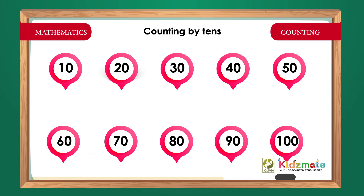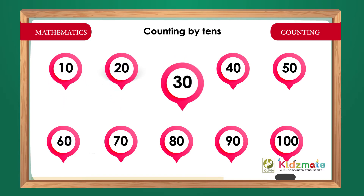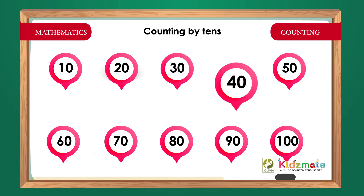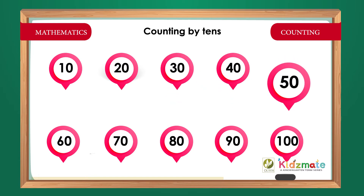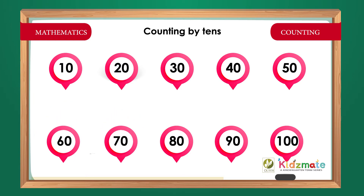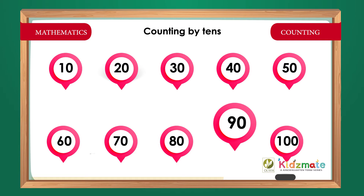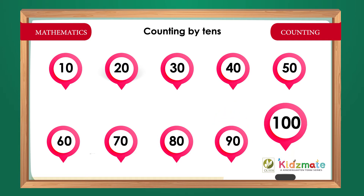Counting by Tens. 10, 20, 30, 40, 50, 60, 70, 80, 90, 100.